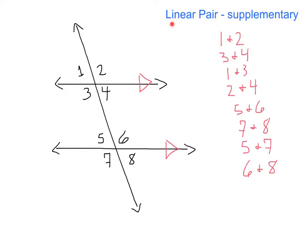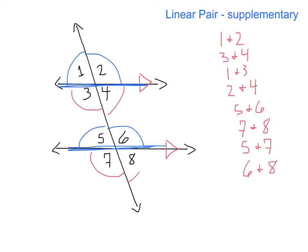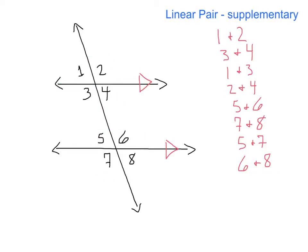Next up, we've got another familiar friend: linear pairs. Linear pairs are always supplementary. On linear pairs, we're always looking at two angles that, when added together, are 180 degrees and they're always on a line. So for example, if we were focusing on this top line, we'd have the linear pair of 1 and 2, as well as 3 and 4. Focusing on this line down here, we'd have angles 5 and 6, and then another linear pair of 7 and 8. Looking at the transversal, this gives us linear pairs of 1 and 3, 2 and 4, and if we focus on the bottom, linear pairs of 5 and 7 and 6 and 8. Since these are supplementary, they'll always add to 180.